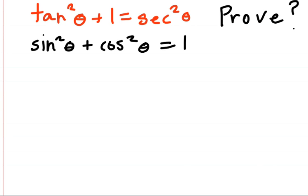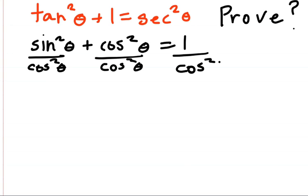And now what we have to do is divide each term by cosine squared.